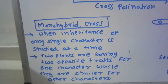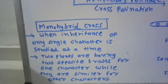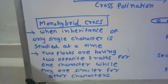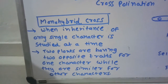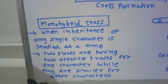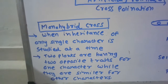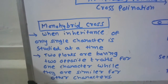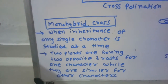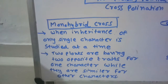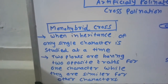In the next lectures, we will discuss Mendel's different hybridization experiments. We will start with a monohybrid cross. In a hybridization experiment, if the inheritance of a single character only is considered at a given point of time, then such a hybridization experiment is referred to as a monohybrid cross.